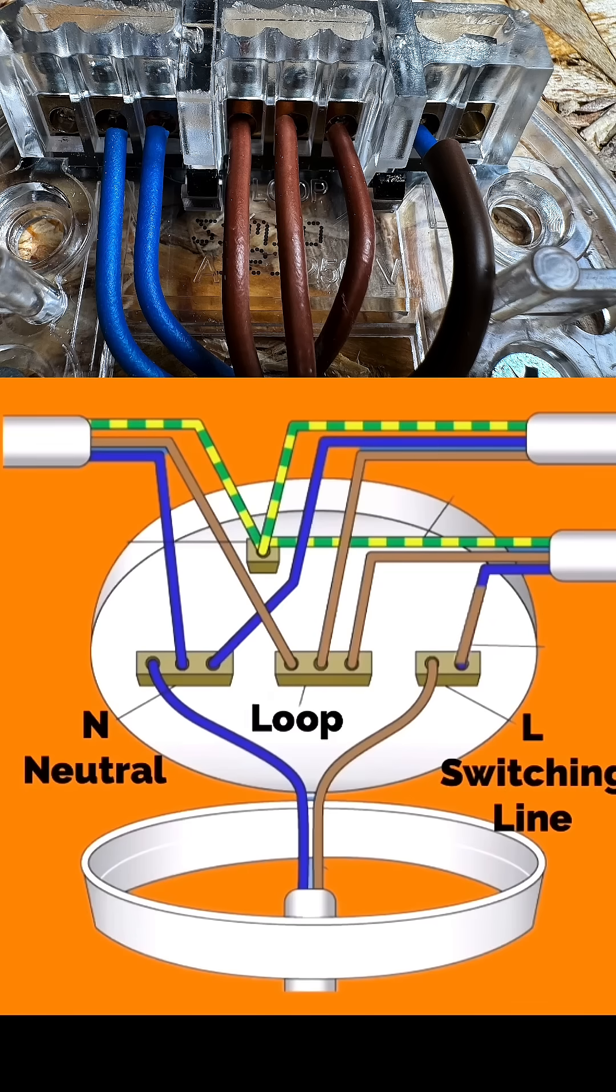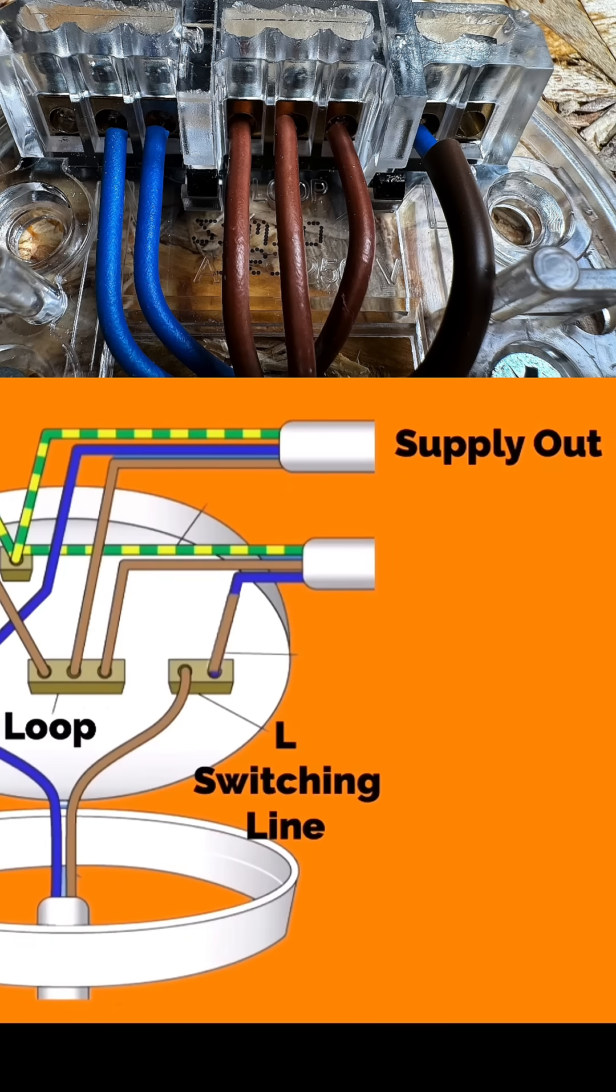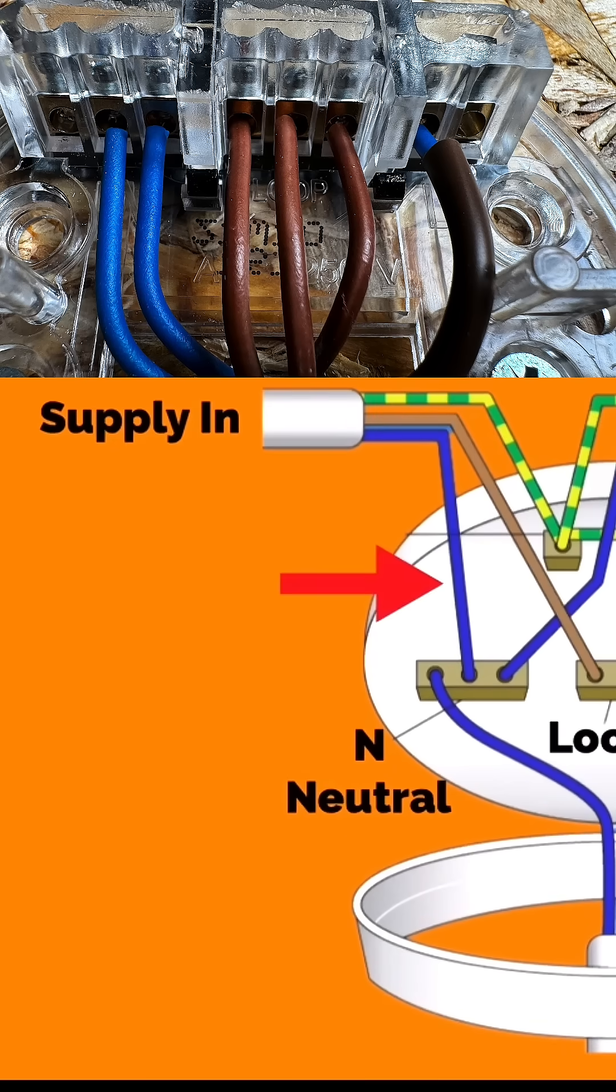If we look at the top two cables, both left and right-hand side, they are the supply coming in and the supply going out. So if the supply comes in on the left-hand side, it will bring a permanent neutral connection, which is terminated within the neutral block.